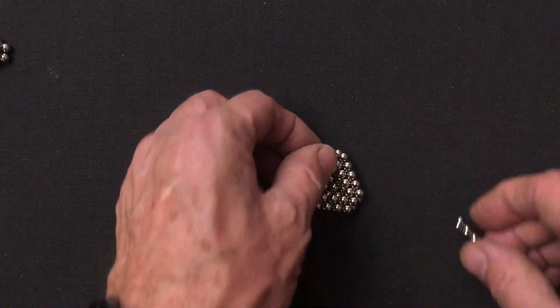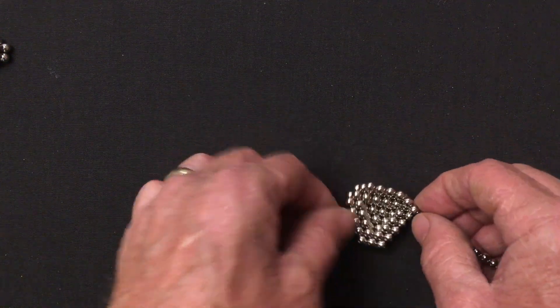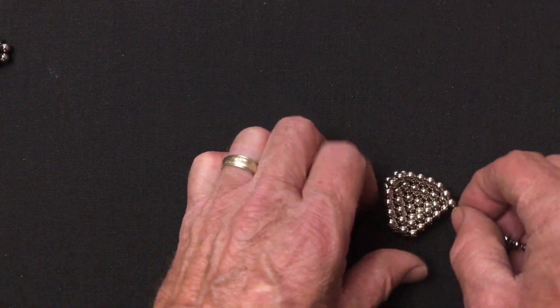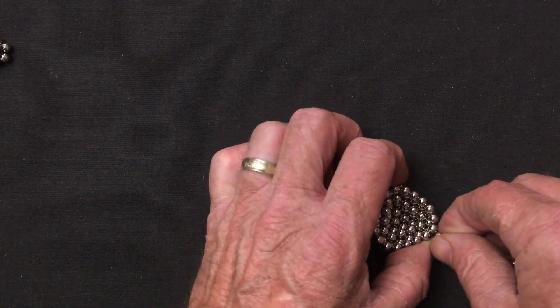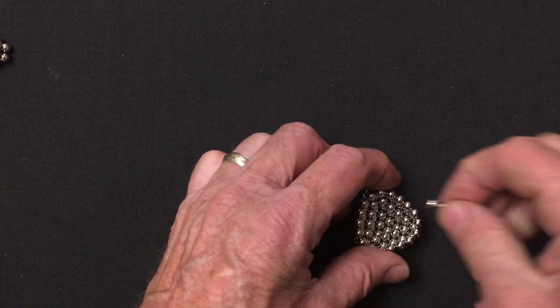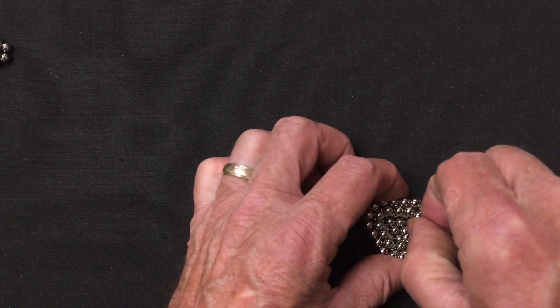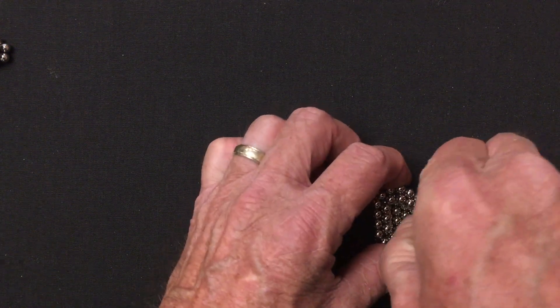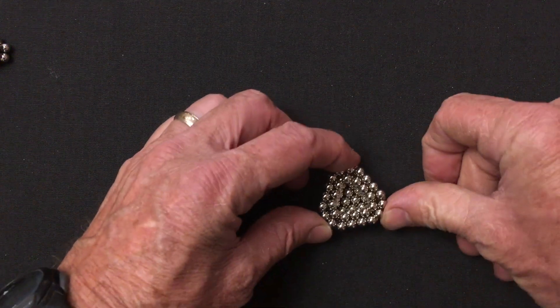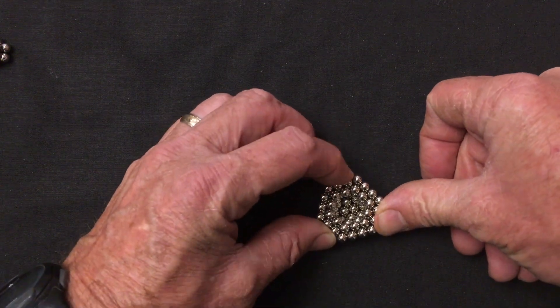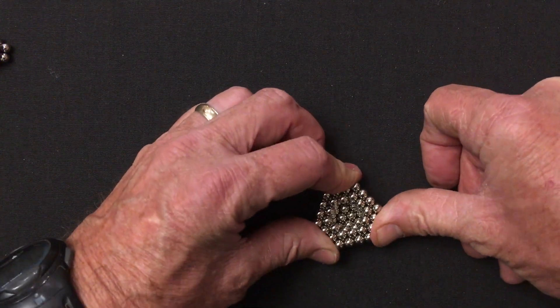Then we do the same thing again. Add a ring of magnets above the outside ring and then add one inside, just inside the one you just added. And then square up the corners a little bit.